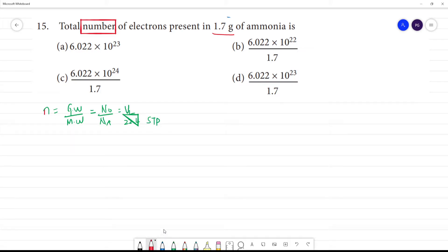What are the data? The number is obtained by N0 by Na, present in 1.7 grams. What do we relate to given weight? This is grams. This is number of molecules or atoms or electrons.